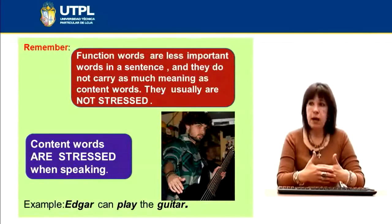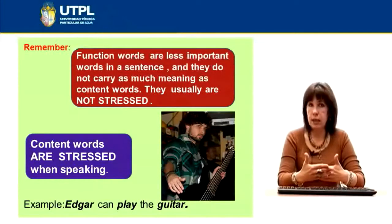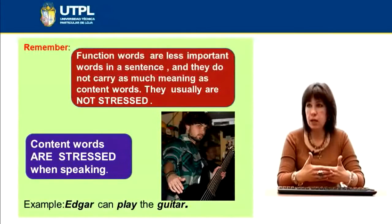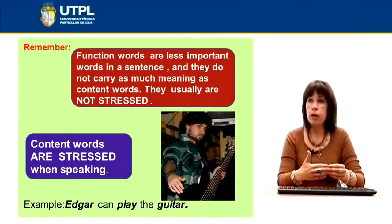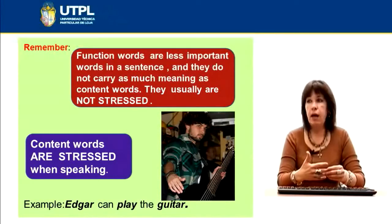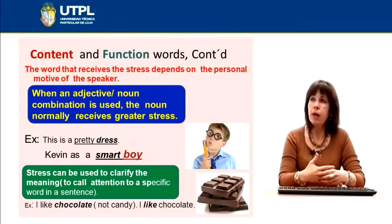Content words are stressed when speaking. For example: 'Edgar can play the guitar.' Here, 'Edgar' is a proper name and should be emphasized, 'play' is a verb and should be emphasized more, and 'guitar' is a noun and should also be emphasized. 'Can' is a modal verb and should not be emphasized, and the article 'the' should not be emphasized either. This is in order to sound natural when you speak English — content words must be stressed, while function words should be spoken faster and with less emphasis.